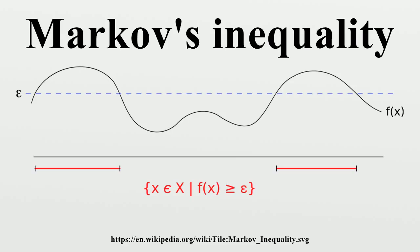In the language of measure theory, we may assume that the function is non-negative, since only its absolute value enters in the equation. Now, consider the real valued function s on X given by s equals epsilon on the set where f greater than or equal to epsilon, and 0 elsewhere. Then,